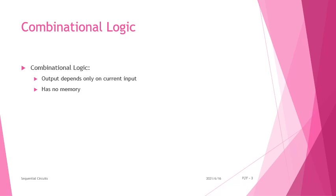Combinational logic means that the output depends only on the current input. That means the output does not depend on past or future inputs. Combinational logic does not require any feedback loops, it has no memory, and memory devices are not used in the circuit. This combinational logic only depends on the present input.